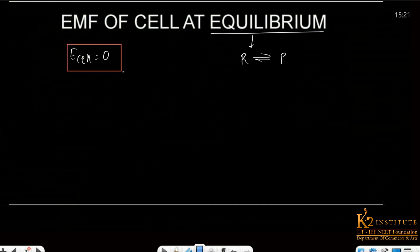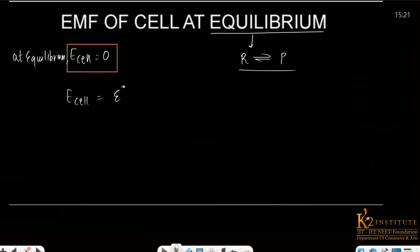A very important point of today's lecture: when equilibrium is reached, the cell potential becomes equal to zero. This happens because the concentration of reactants becomes equal to the concentration of products — no change in the ionic concentration exists. So if we look at our Nernst equation in its simplified form: 0.0591 upon N, log oxidized upon reduced form.